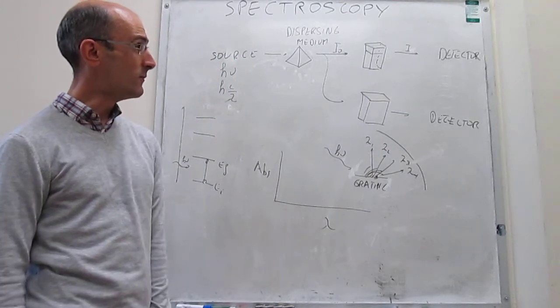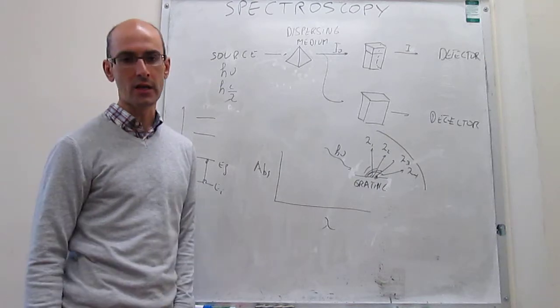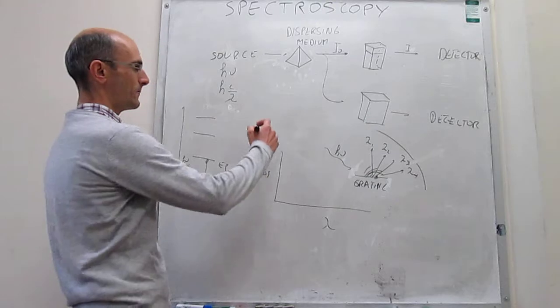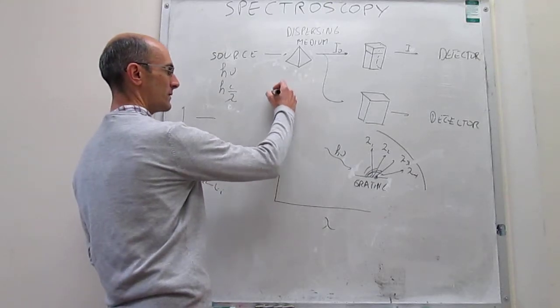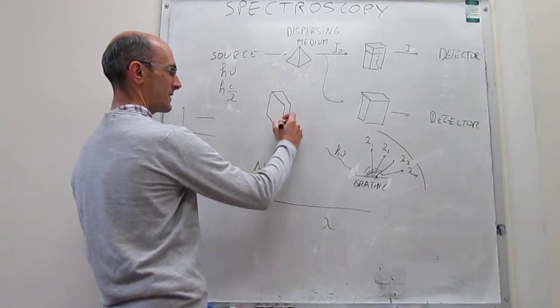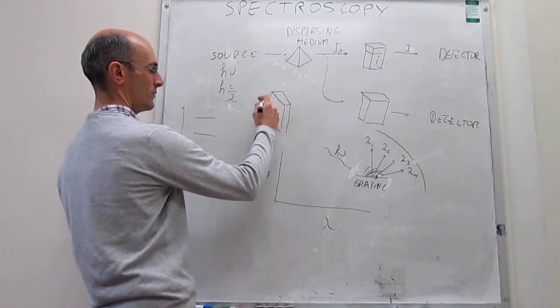So what about detectors? Well, usually the way that modern detectors work is using photodiodes. So what is a photodiode? A photodiode is going to be a material that is sensitive to photons.